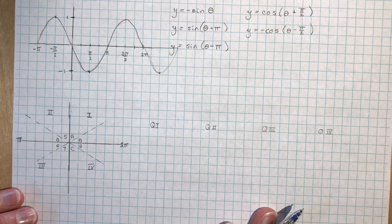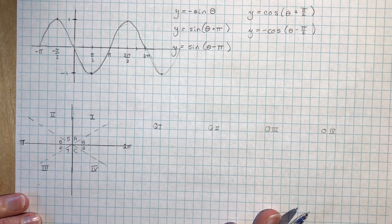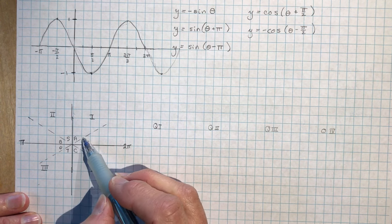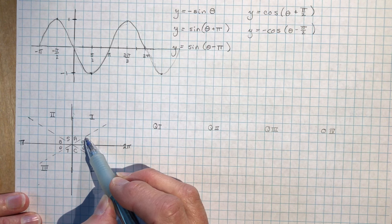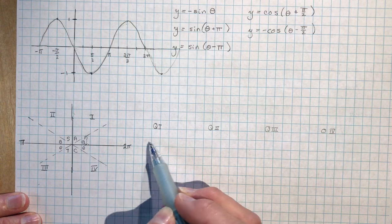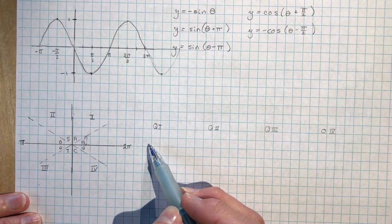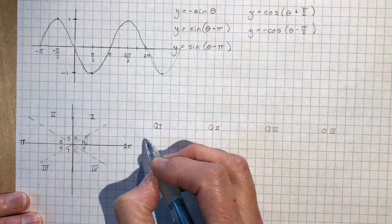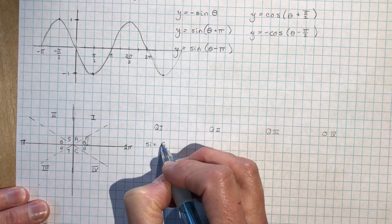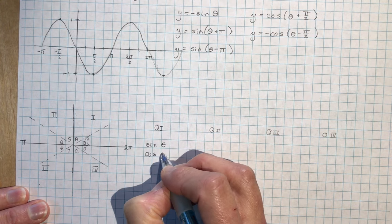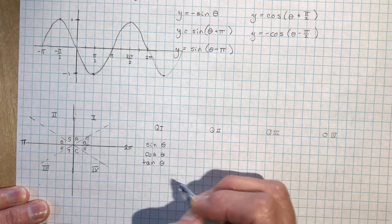Now the second thing we're going to look at is another way of describing trig functions — similar trig functions. We're going to look at just theta, where theta is going to be just an acute angle. How do I describe the sine, cosine, and tan when I go into another quadrant? In quadrant 1, everything is fine — sine theta, cos theta, tan theta are all the trig ratios of theta in that quadrant.